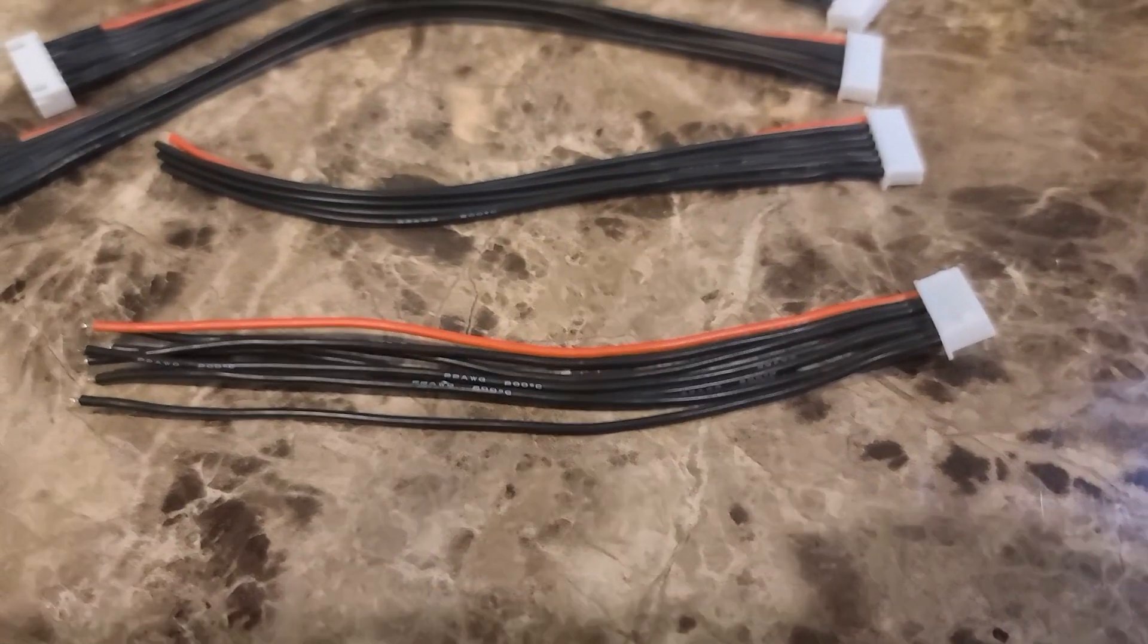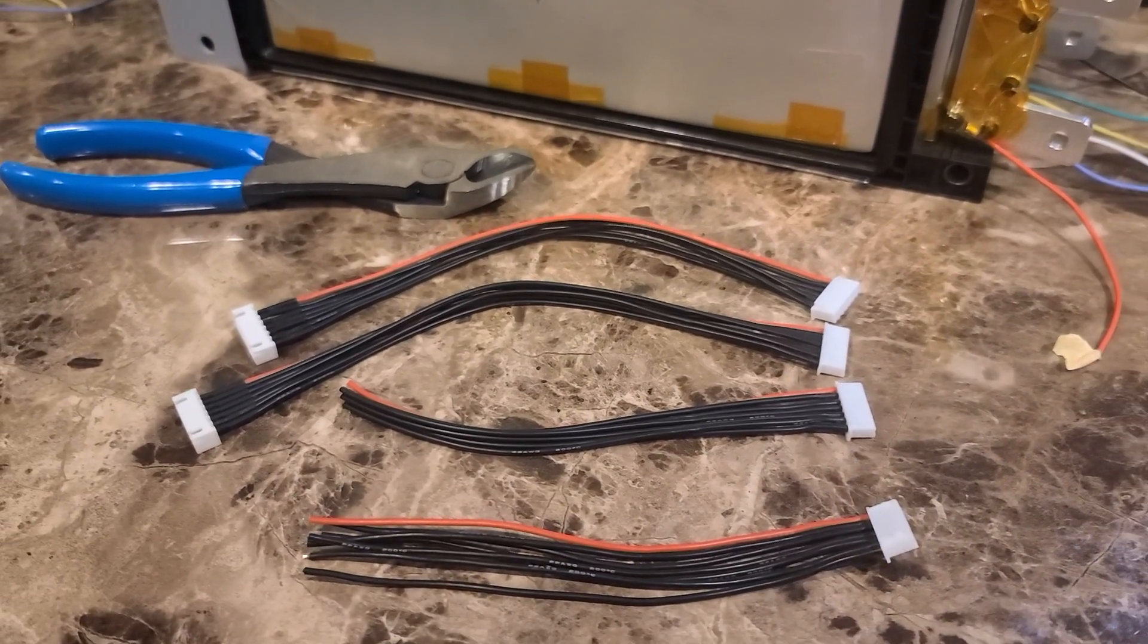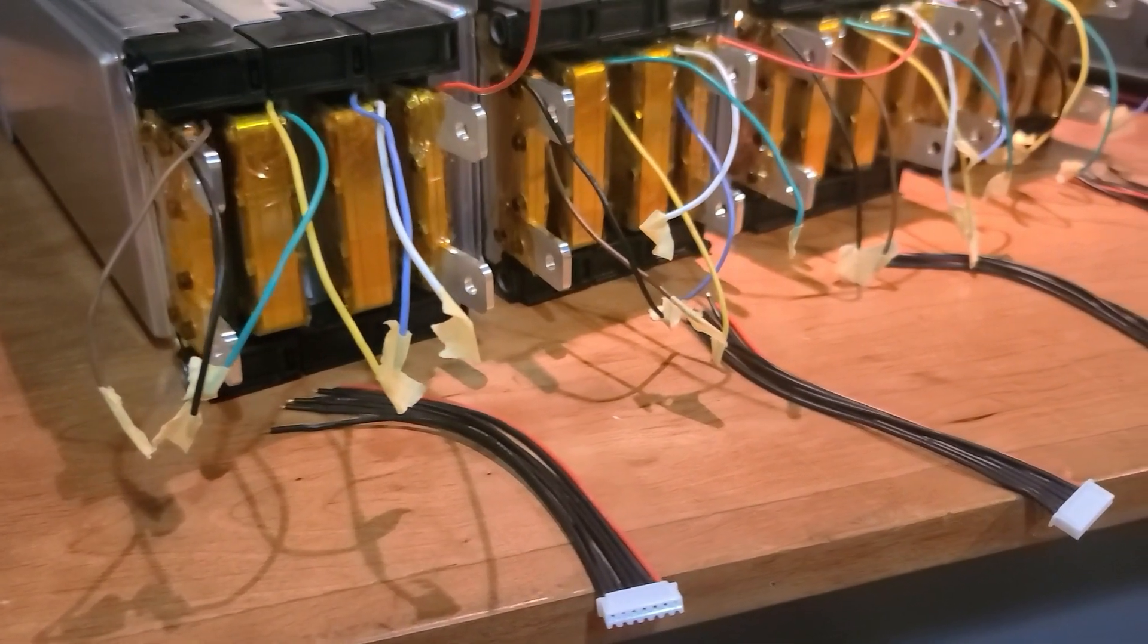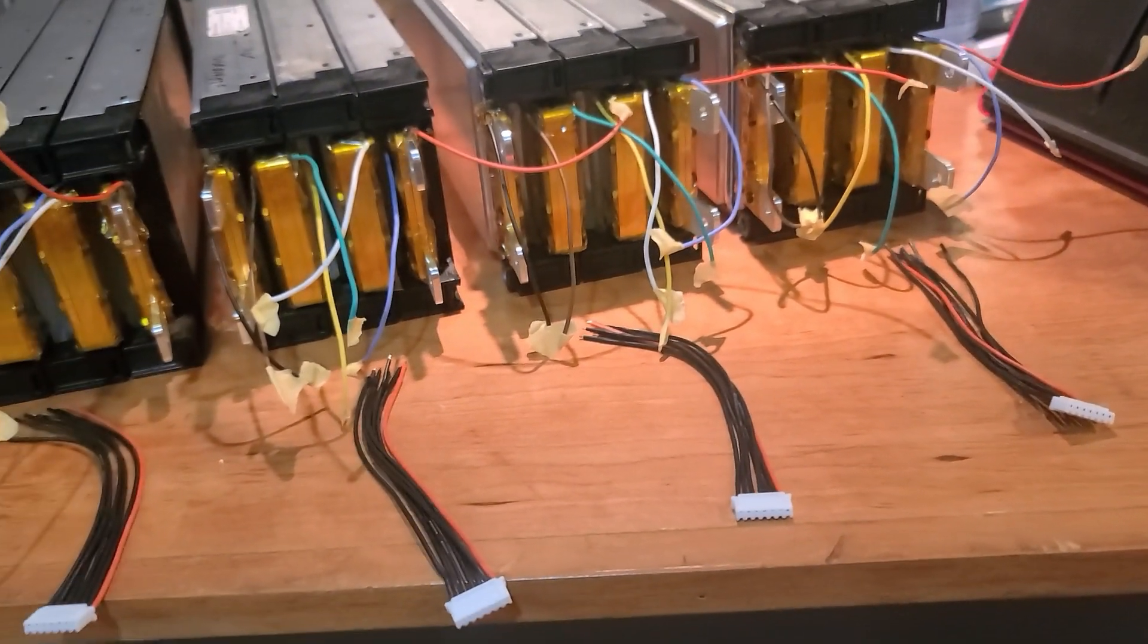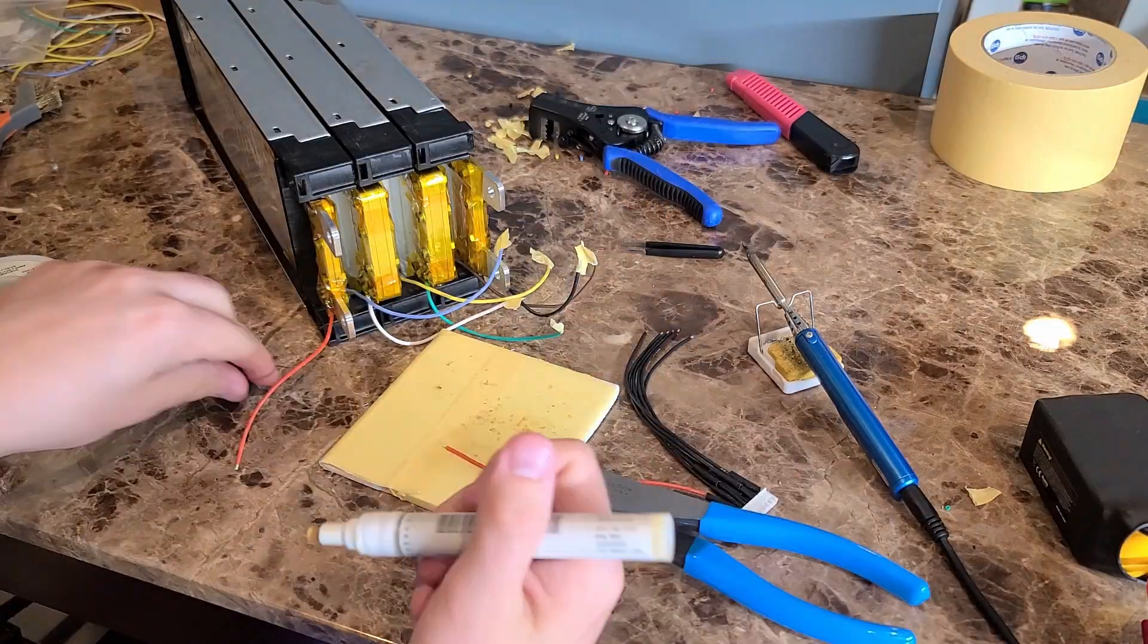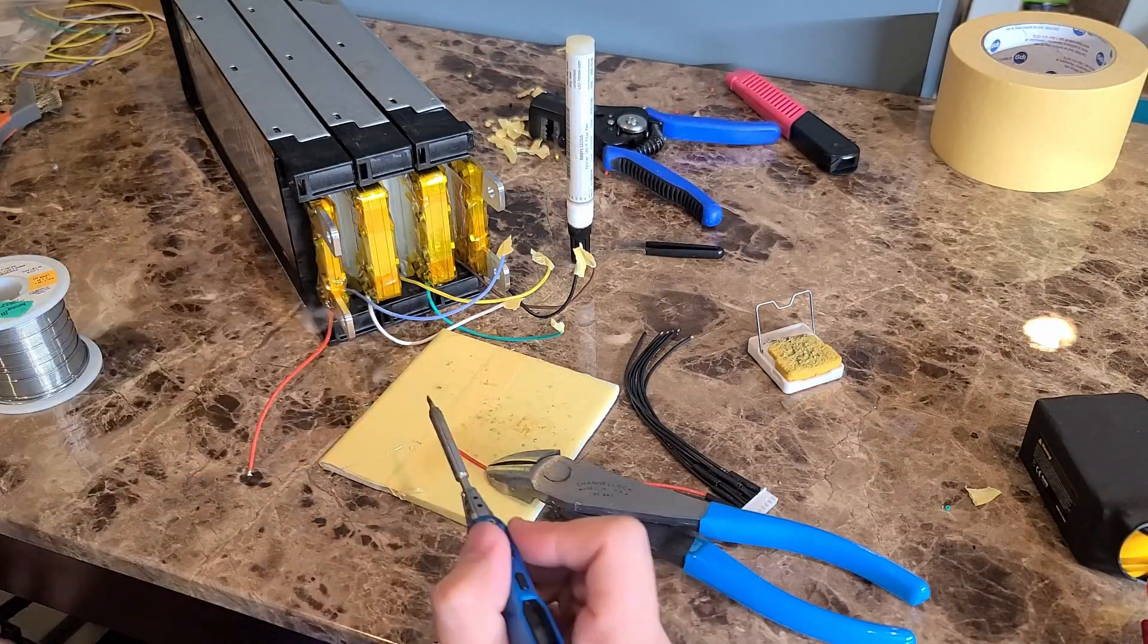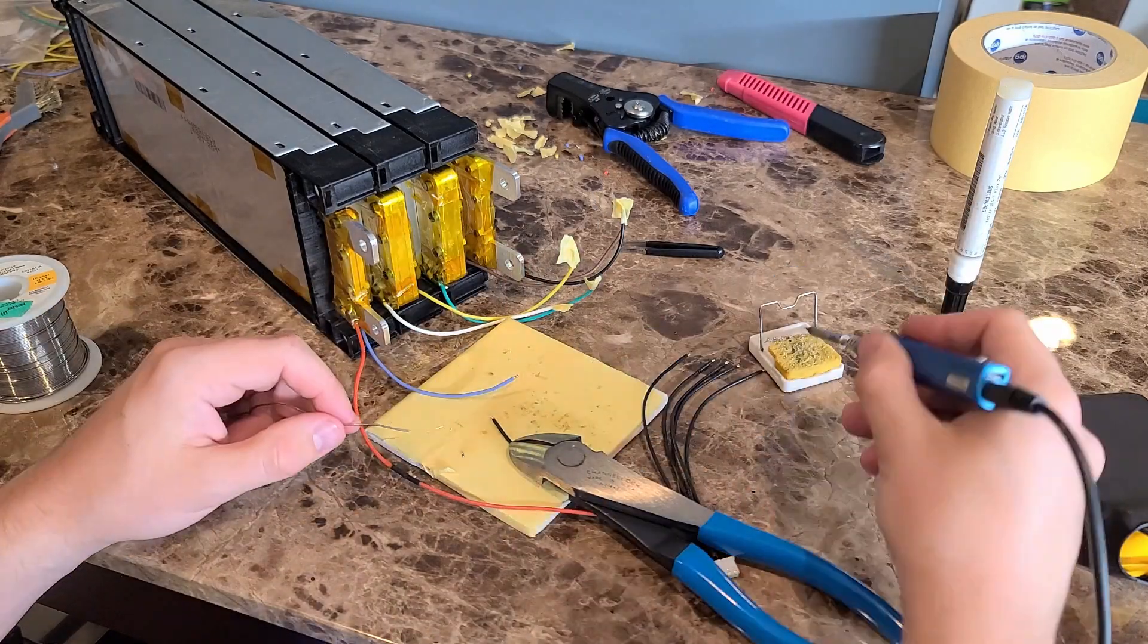So after I ended up finishing up taping up these batteries, I ended up buying a bunch of these balance leads. They're JST 6S leads because each of my battery packs are going to be configured in a 6S configuration. So I ended up taking off all that duct tape off the wires and then ended up soldering them one by one.